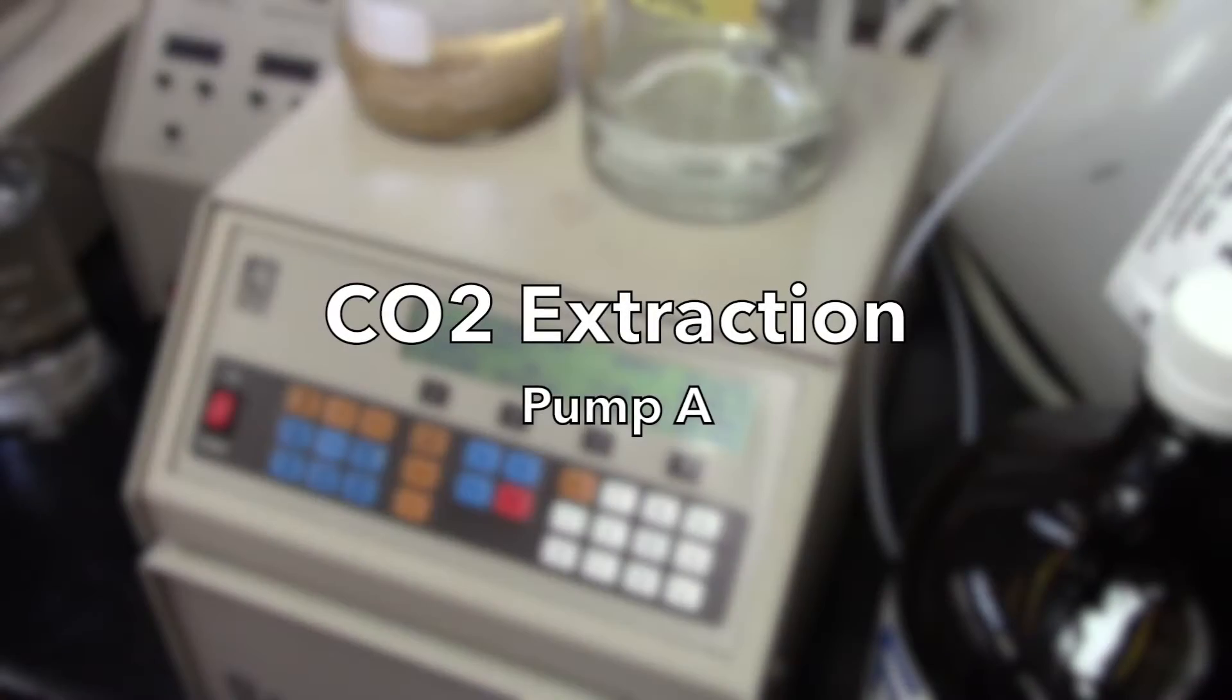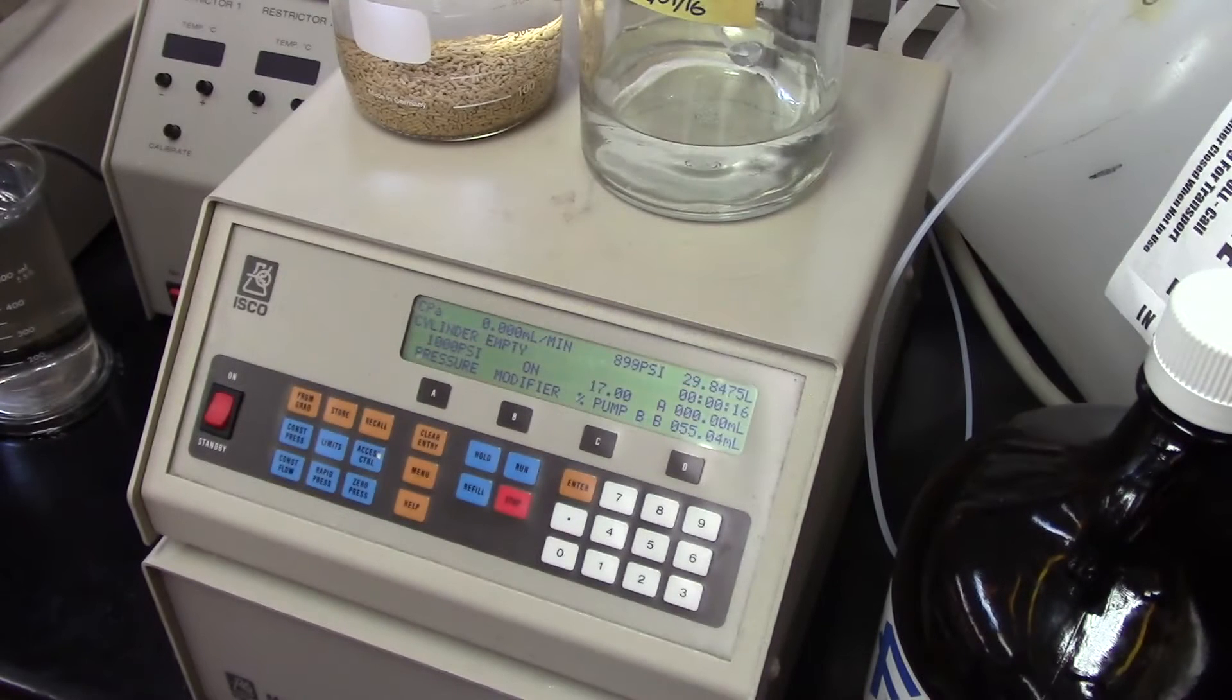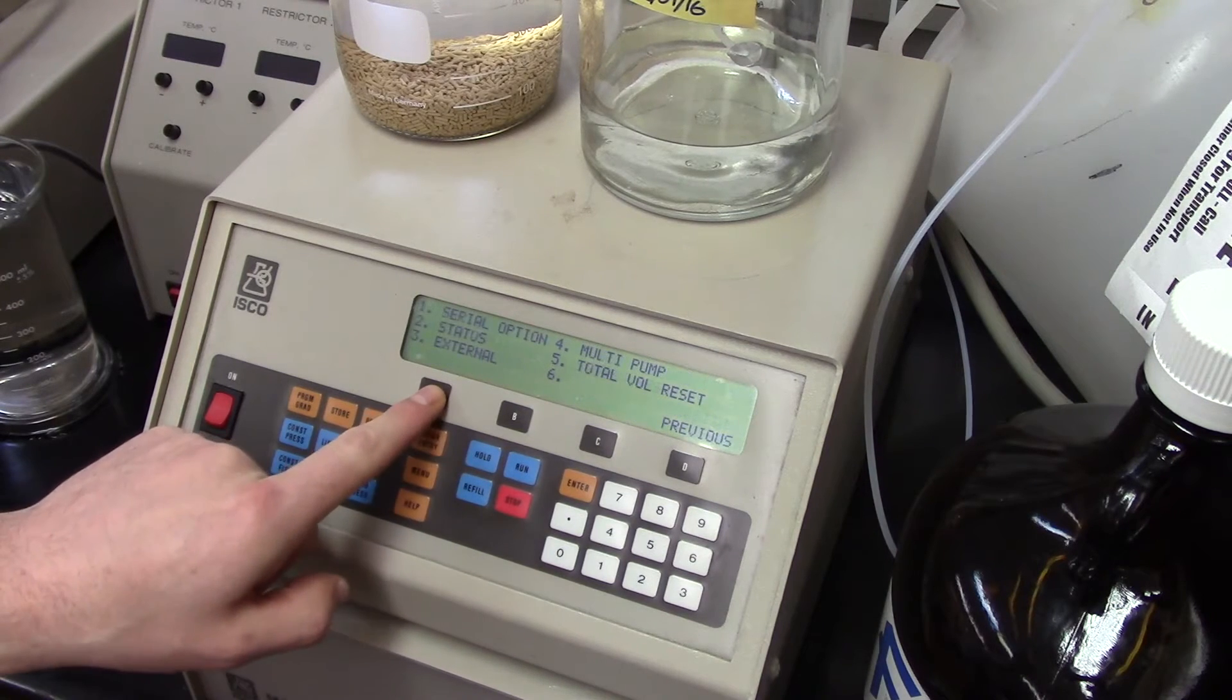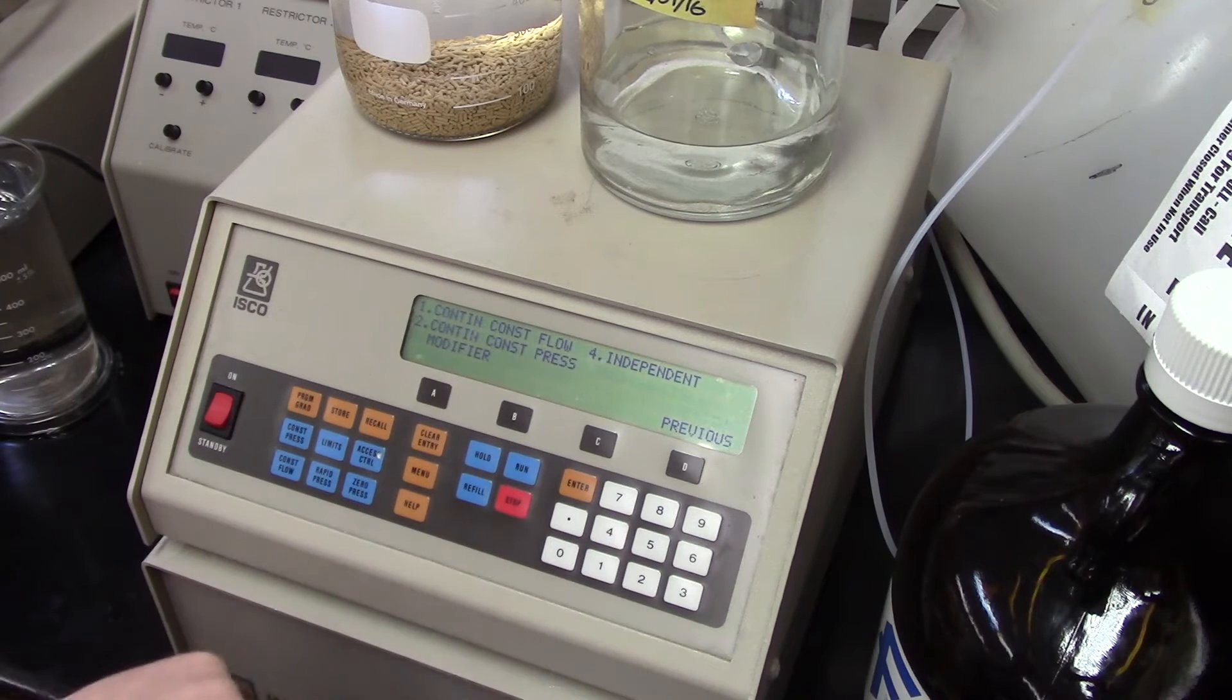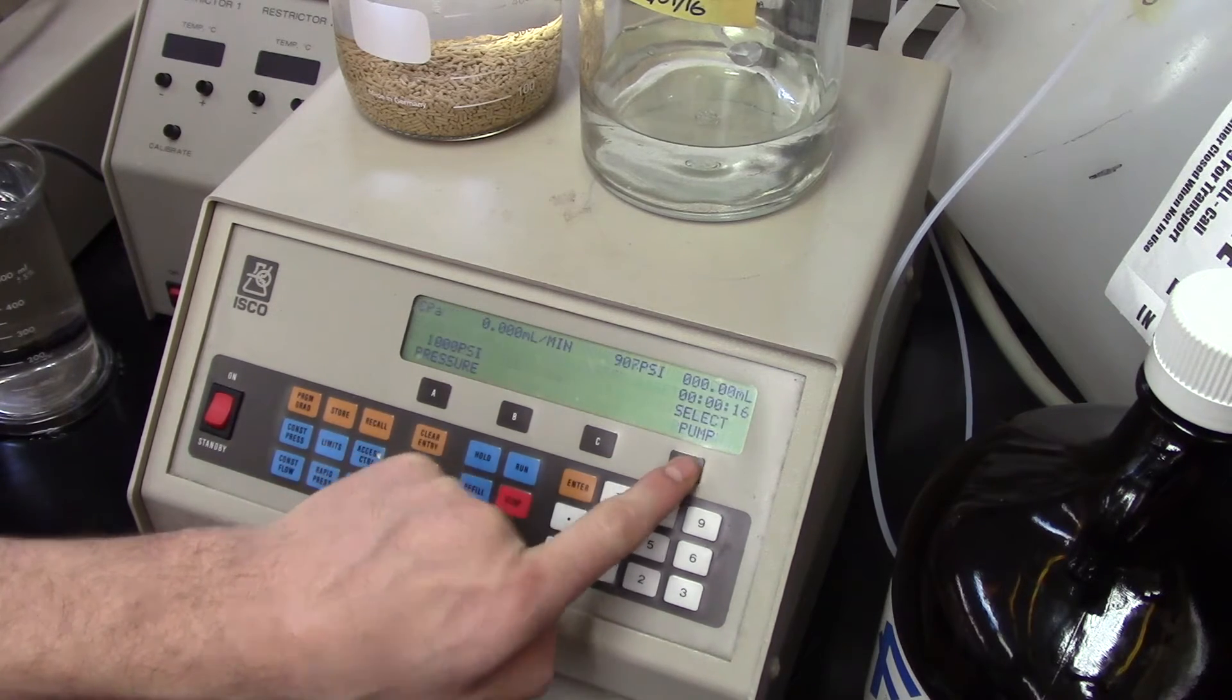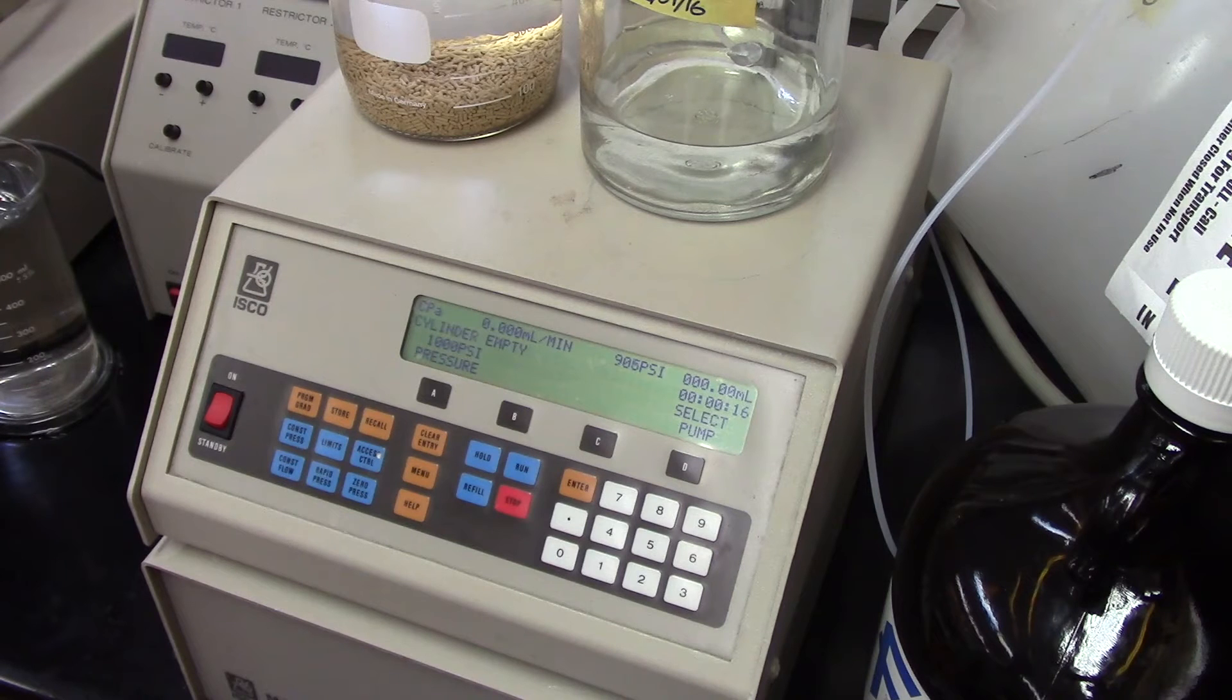I'll show the basic CO2 extraction without a modifier first. Start by setting the controls to utilize each pump independently. First, click menu, then A button for more options, then click 4 for multi-pump mode, and 4 again for independent. Click enter, then the D button three times to return to the home panel. This allows you to control pump A and B independently.